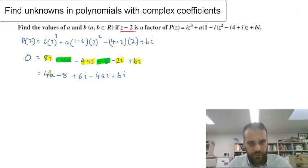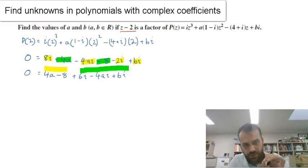Alright, so now we've got real components, imaginary components, and the whole thing's going to be equal to 0. Now if the whole thing's going to be equal to 0, that means that the real component is equal to 0, and that means that the imaginary component is going to be equal to 0.